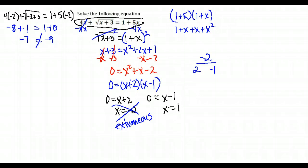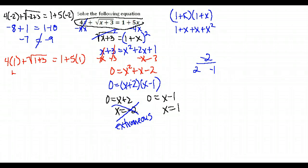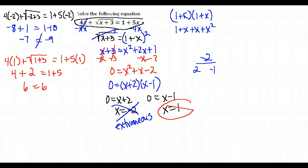Let's try x equals 1. We go back to our original problem: 4 times 1 plus the square root of 1 plus 3. Does that equal 1 plus 5 times 1? This gives me 4 plus the square root of 4, which is 2, so 4 plus 2 is 6. Over on the right-hand side, I have 1 plus 5 equals 6. Does 6 equal 6? Yes, it does. So x equals 1 is a valid solution. x equals negative 2 was not valid, so our only solution is x equals 1.